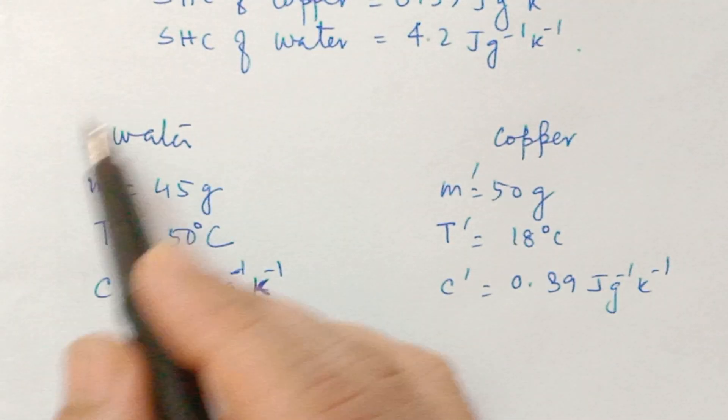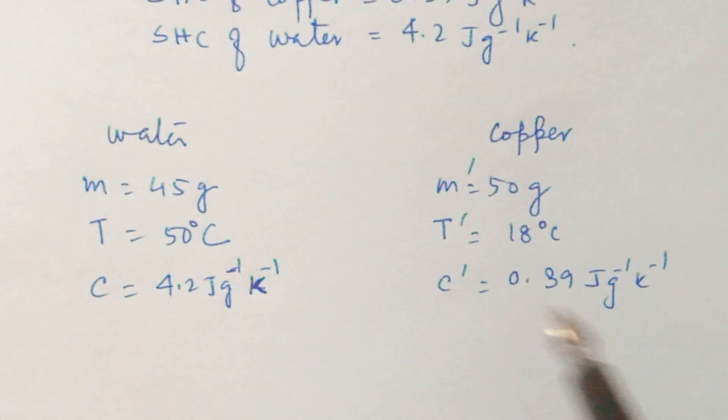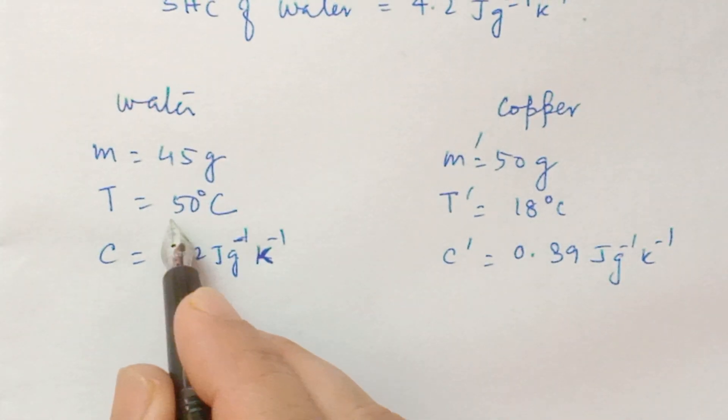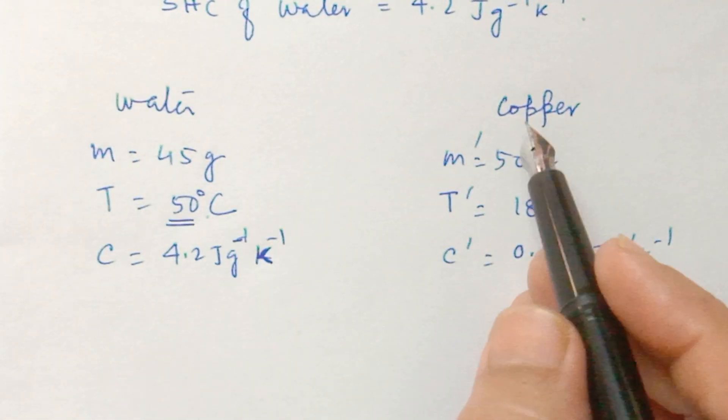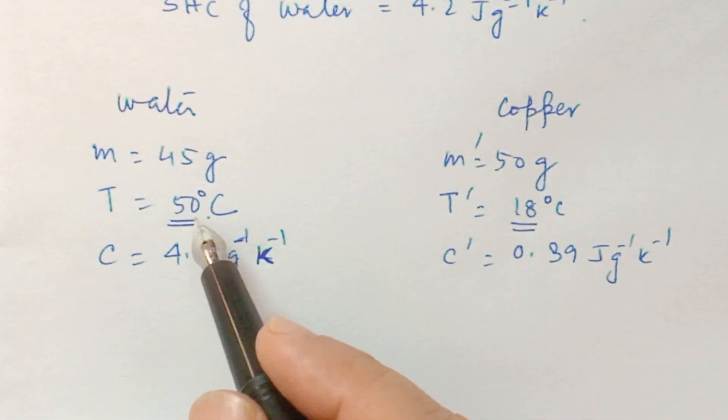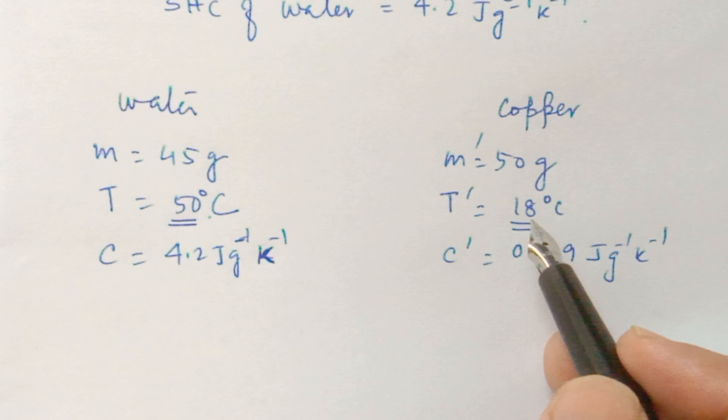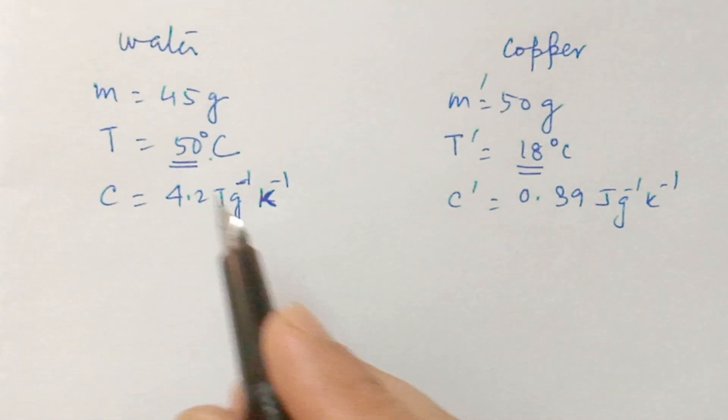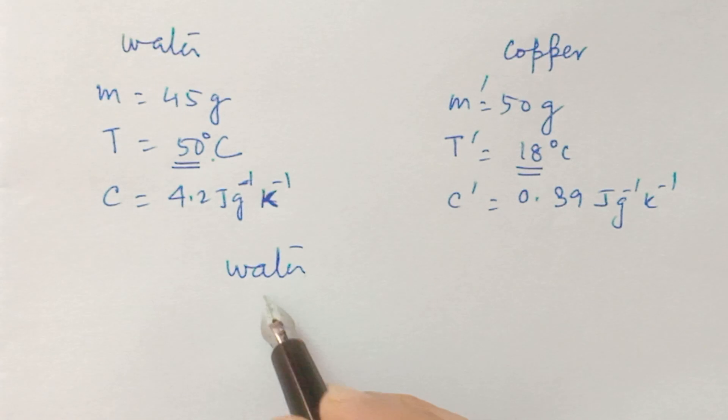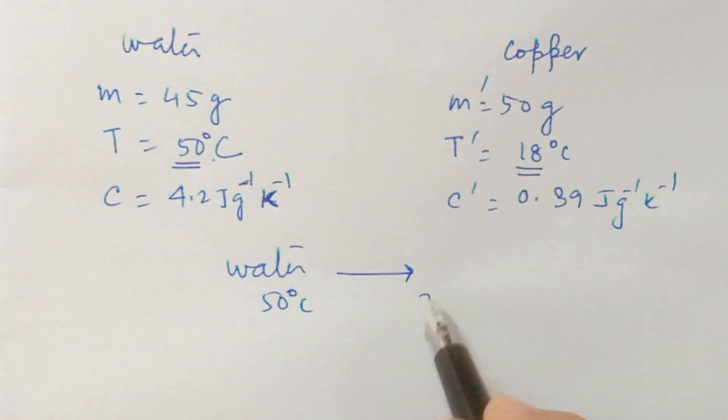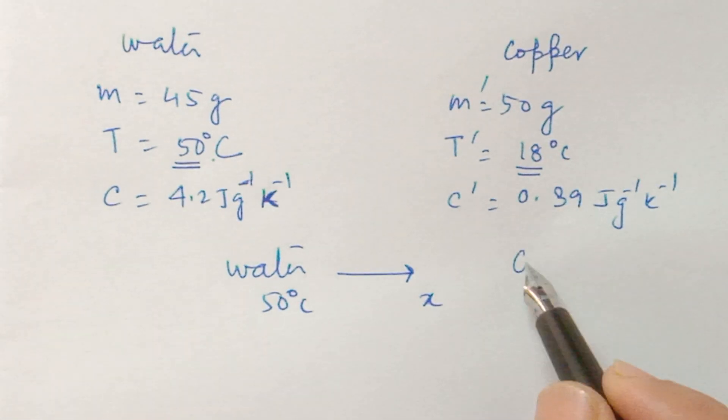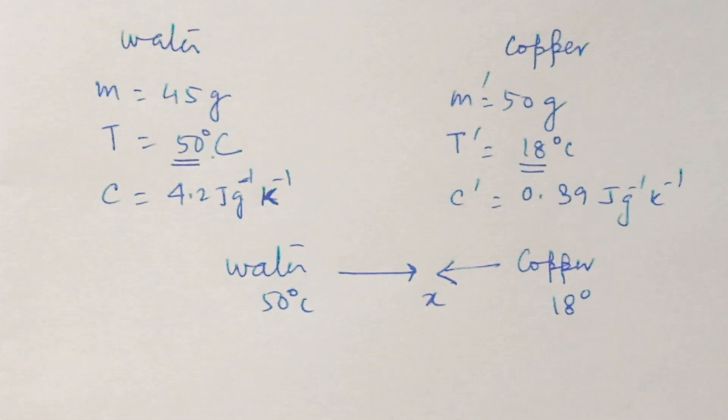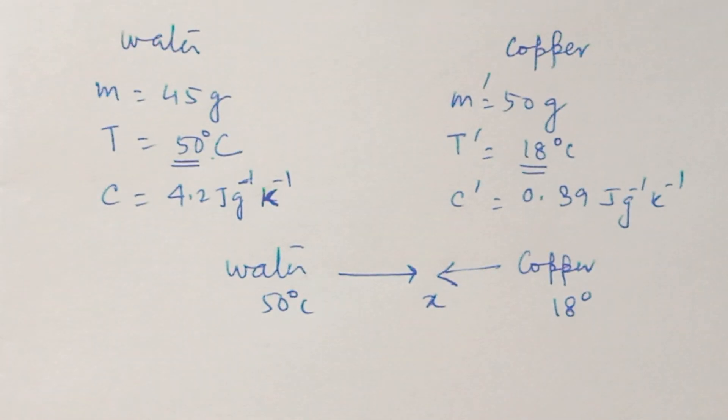When we mix two substances, what will happen? Heat loss and gain. How will we decide? Look at the temperature: initial temperature of water is 50 degree C, copper is 18. So water is a hot body, this will lose heat, and copper is lower temperature so this will gain. Water at 50 degree C will go to final temperature x and copper at 18 degree will go to x degree, so both will reach a common final temperature where there will be no heat transfer.